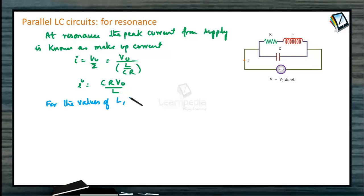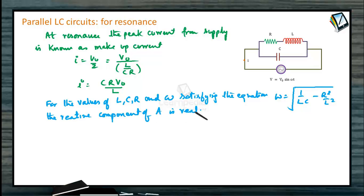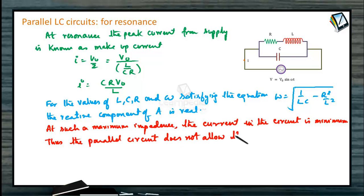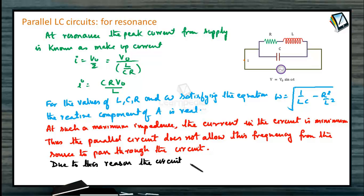Thus, the parallel circuit does not allow this frequency from the source to pass through the circuit. Due to this reason, the circuit operating at such a frequency is known as a rejector circuit, for values of L, C, R, and omega satisfying omega equals root(1/LC minus R²/L²).